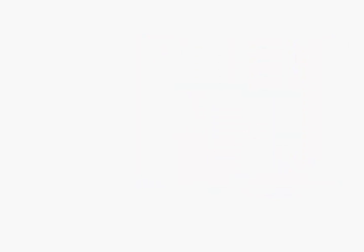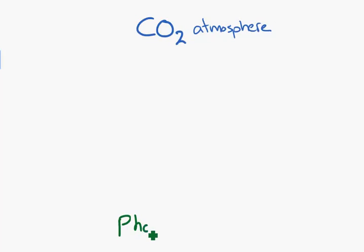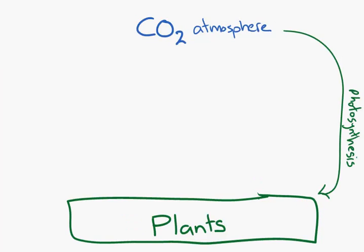Most of the carbon in an ecosystem is up in the atmosphere. Carbon gets into the food chain through photosynthesis, through producers. We need to label the arrow. From here we need to get the carbon to move through our food chain.